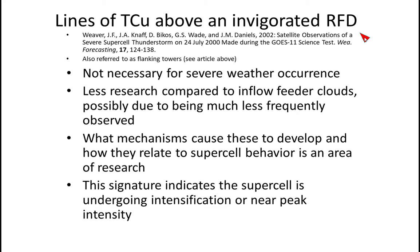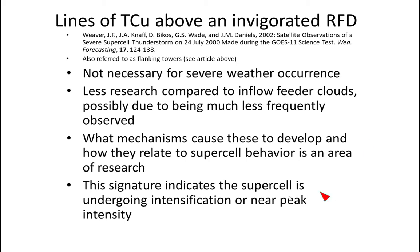Now let's talk about lines of towering cumulus that develop above an invigorated RFD, referred to in the literature as flanking towers. Like inflow feeder clouds, these are not necessary for severe weather occurrence. There is less research compared to inflow feeder clouds on this topic, possibly due to being much less frequently observed. What mechanisms cause these to develop and how they relate to supercell behavior is an area of open research. However, what we know is that the signature indicates the supercell is undergoing intensification or is near peak intensity.